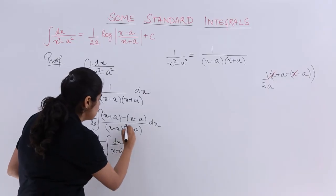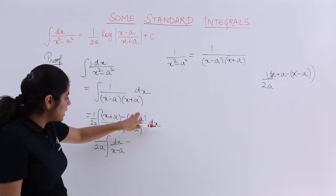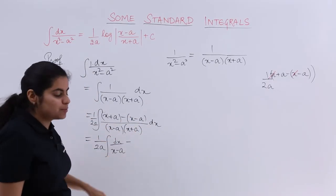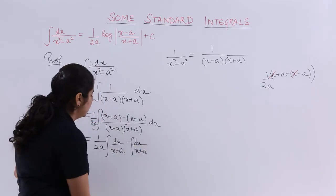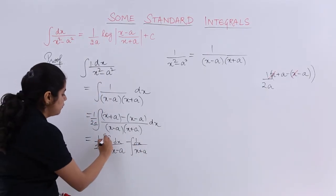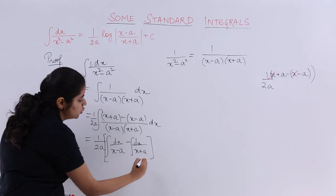Similarly, what happens? This is the minus sign. Again, x minus a, x minus a, x plus a. It becomes 1 upon x plus a dx and the integration symbol is all over. Also, I have 1 upon 2a outside that does not change.